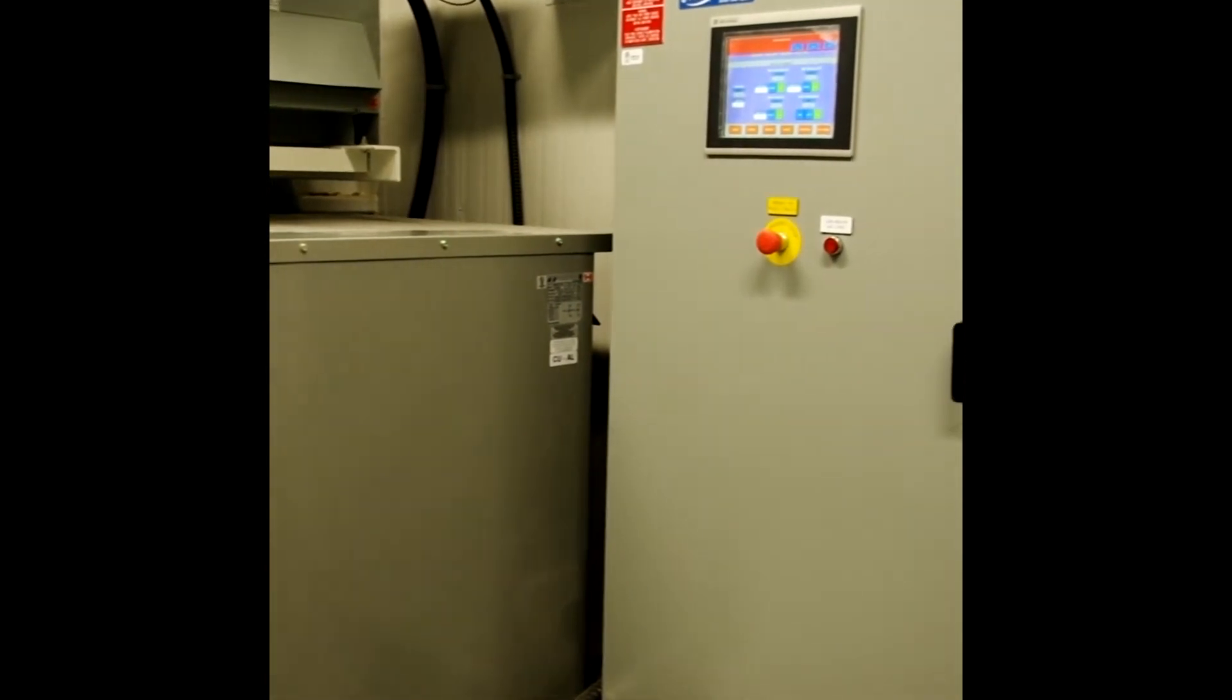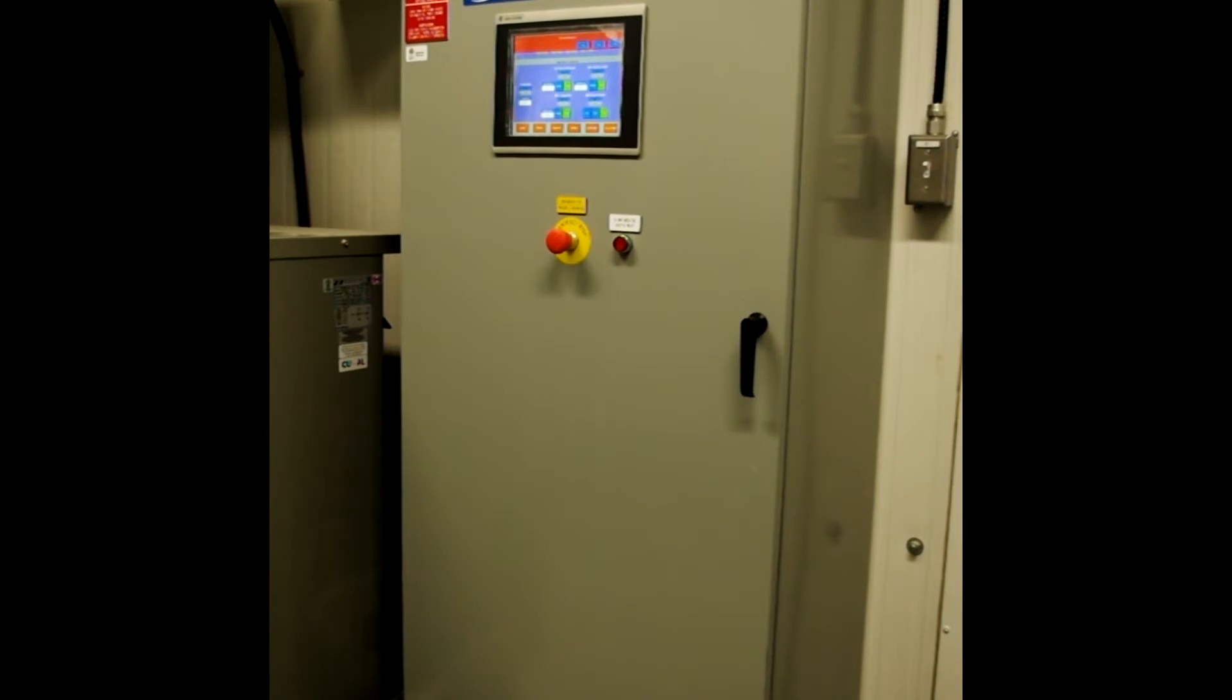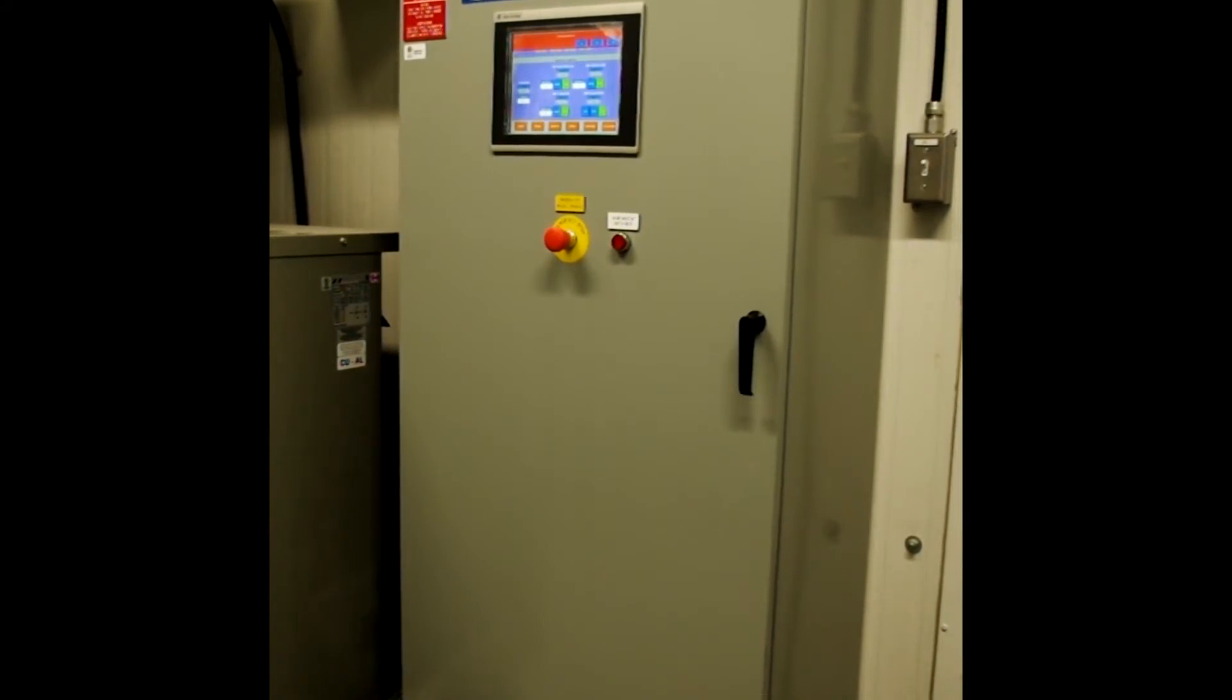To the right of that, you've got control panel A with an HMI and emergency stop for the process and truck fill, as well as an alarm indicator light and a reset button.